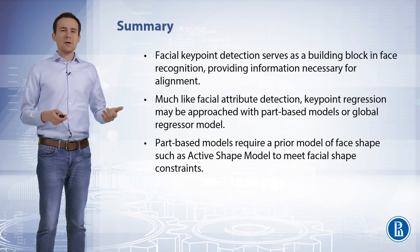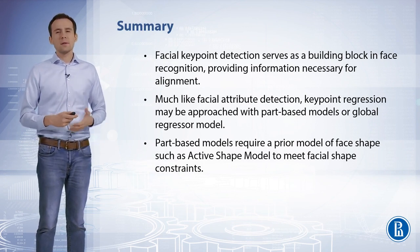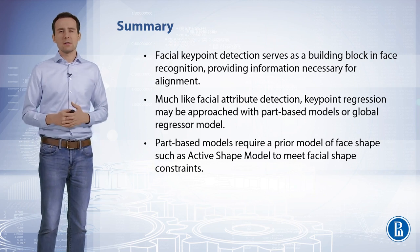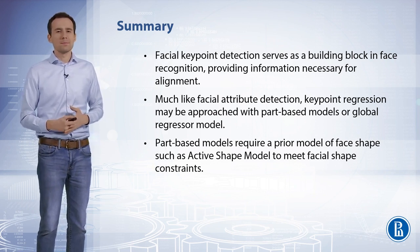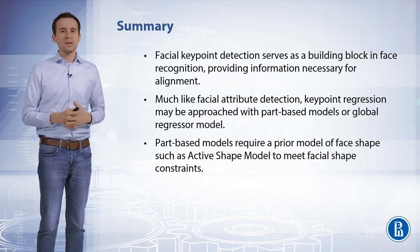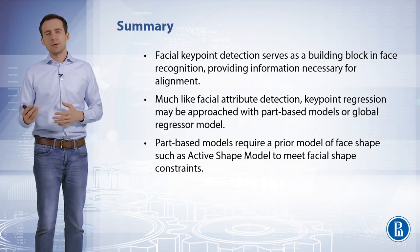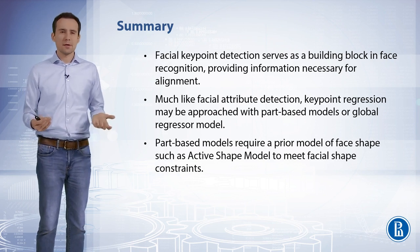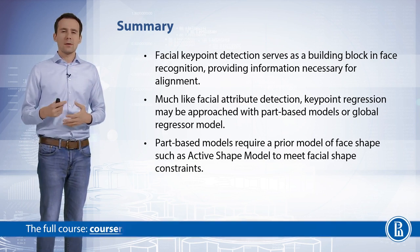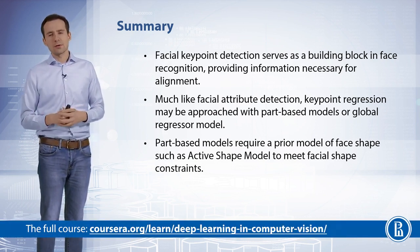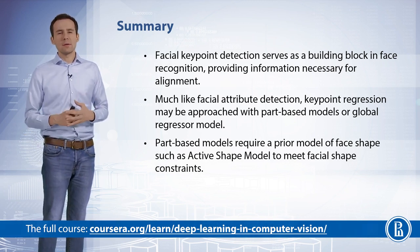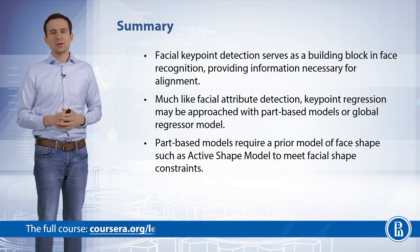To summarize, facial keypoint detection is a building block in face recognition, providing information necessary for face alignment. Much like facial attribute detection, keypoint regression may be approached with part-based models or a global regressor model. We can also account for a prior model of shape, such as the active shape model or active appearance model, to meet the facial shape constraints.